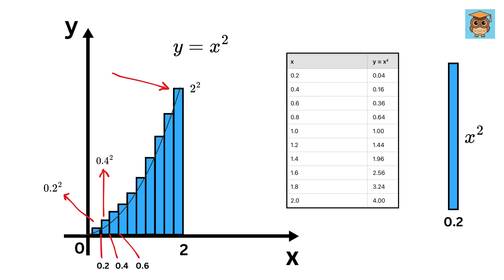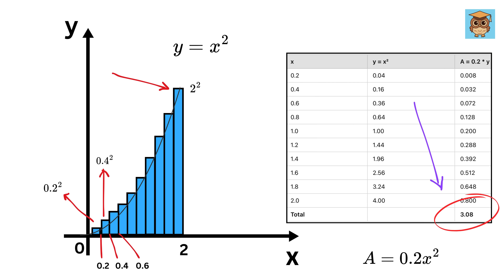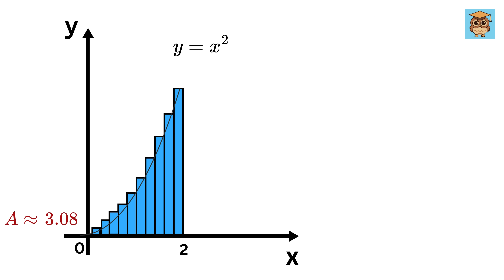The area of each rectangle will be base times height. Do it for all of these rectangles and sum them up. So the area of this parabola will be approximately this sum. See how cleverly we have approximated the area of this parabola by just approximating it as a collection of rectangles.